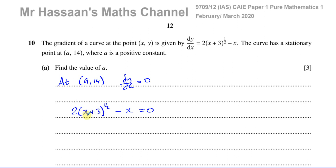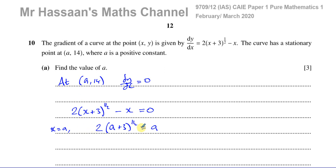We can replace x with a at this point. So we have 2 times (a + 3) to the power of a half equals a. Just replace the x with a because at that point x equals a. And that will give us — if I solve this equation now, I'll get my answer.